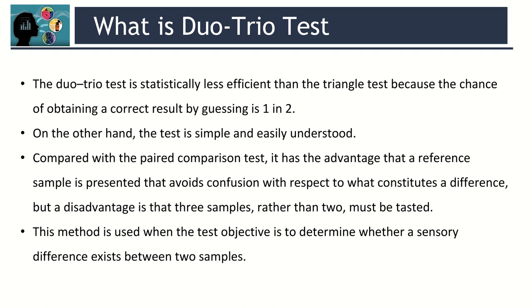First, let's see what is the Duo-Trio test. The Duo-Trio test is statistically less efficient than the triangle test because the chance of obtaining a correct result by guessing is 1 in 2. On the other hand, the test is simple and easily understood. Compared with the paired comparison test, it has the advantage that a reference sample is presented that avoids confusion with respect to what constitutes a difference, but the disadvantage is that 3 samples rather than 2 must be tested.